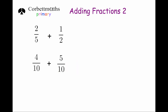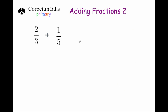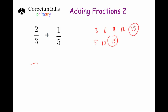Let's look at another example: two thirds plus a fifth. Again, there's no whole number we can multiply the numerator and denominator of two thirds by to get a five on the denominator, so we're going to have to change both denominators. We write down the multiples of three and the multiples of five to find the lowest common multiple. As you practice these you'll get really quick. Multiples of three: three, six, nine, twelve, fifteen. Multiples of five: five, ten, fifteen. So fifteen is the lowest common multiple, and we're going to change both denominators to fifteen.